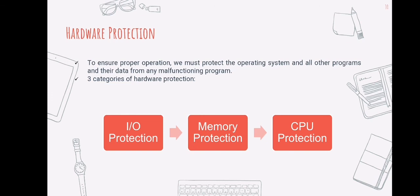Next is memory protection. We must secure the interrupt vector from alteration by a user program in order to assure proper functionality. In addition, the interrupt service procedures in the operating system must be protected from alteration. Even if the user did not obtain illegal access to the computer, changing the interrupt service routines would most likely cause the computer system's spooling and buffering to fail, which will be discussed in a later discussion.